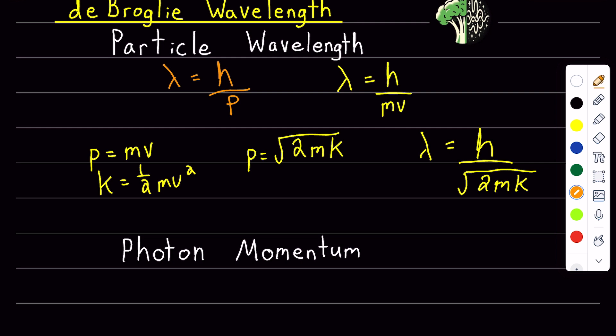I can't use h over mass times velocity because photons don't have a mass. So instead I can write that the momentum of a photon is Planck's constant over the wavelength.